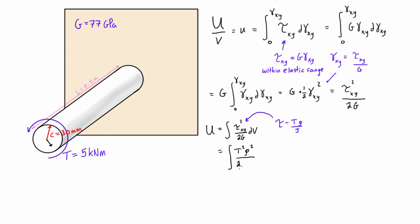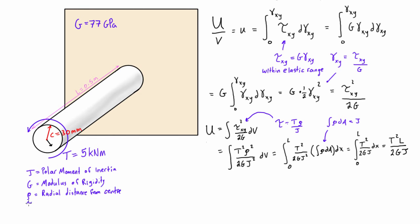So what we can do is we can plug this in and we'll find that the total strain energy is just t squared L over 2gj. And we have all of these numbers for this example problem, so let's go and plug them all in.